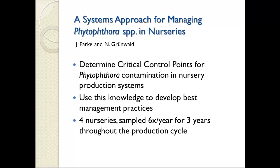We thought we could use this knowledge to develop best management practices. We tested four nurseries, sampling each stage of production every two months for three years — the soil, the plants, the water, the pots, and the potting media. We collected about 800 phytophthora isolates and then identified them to species based on their DNA.